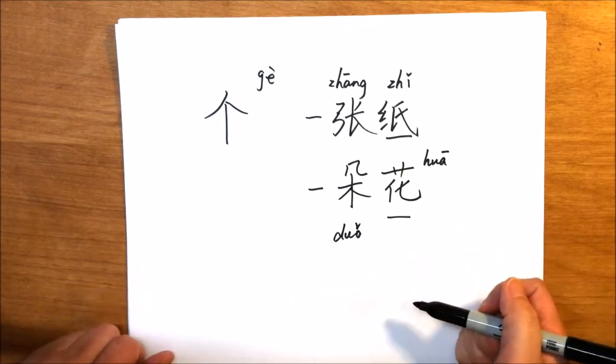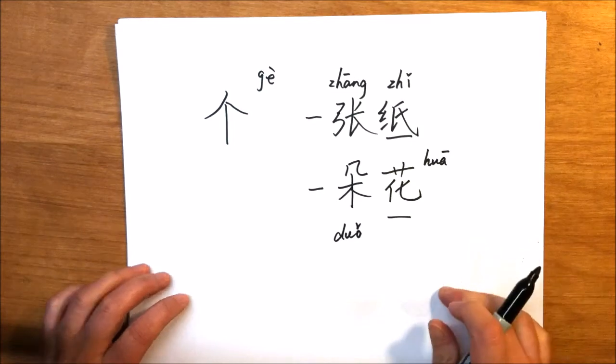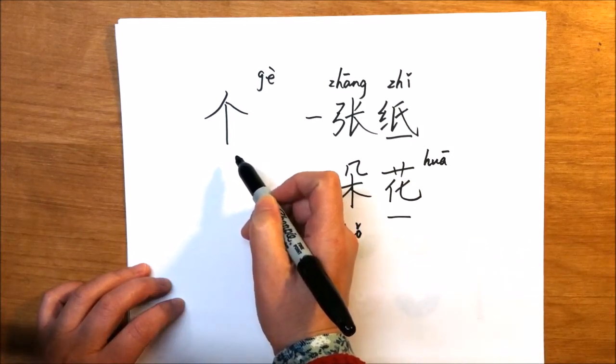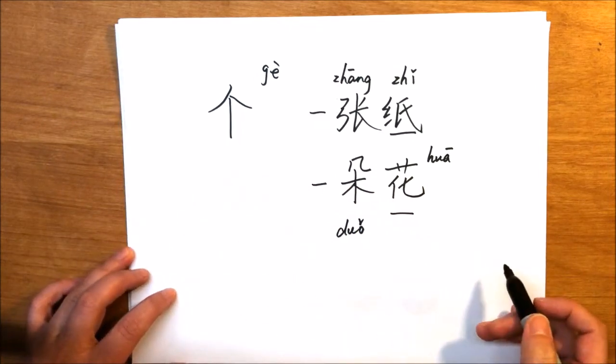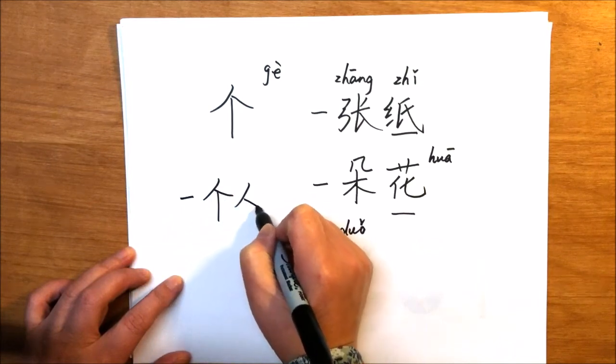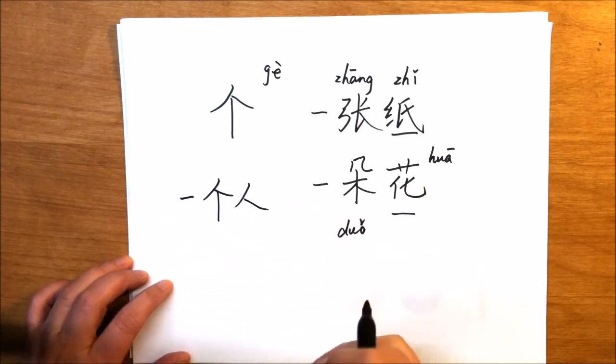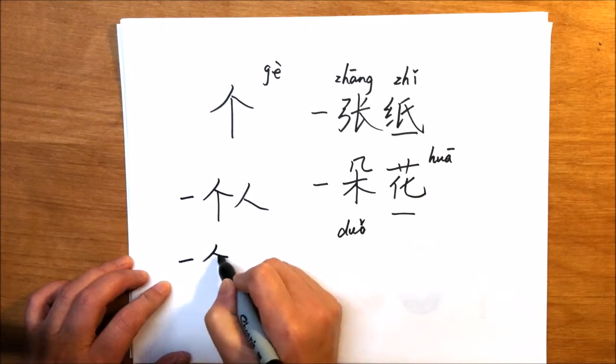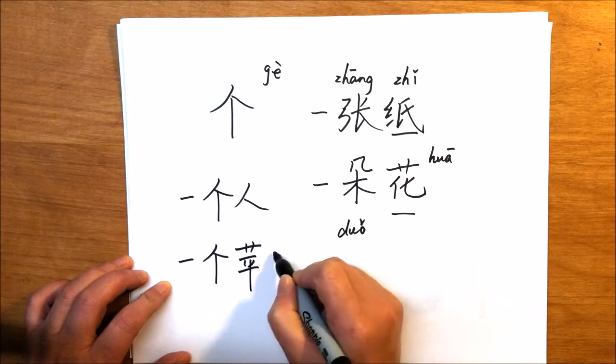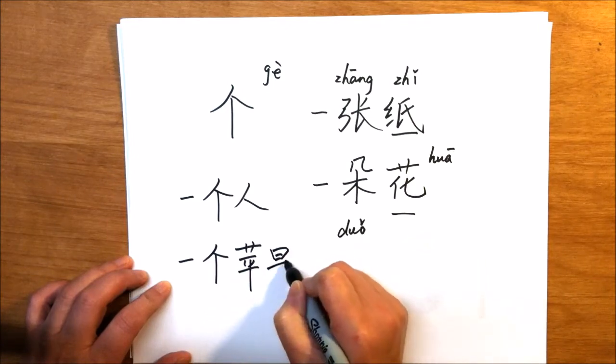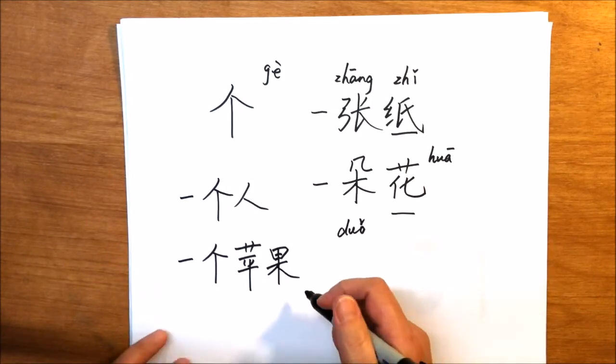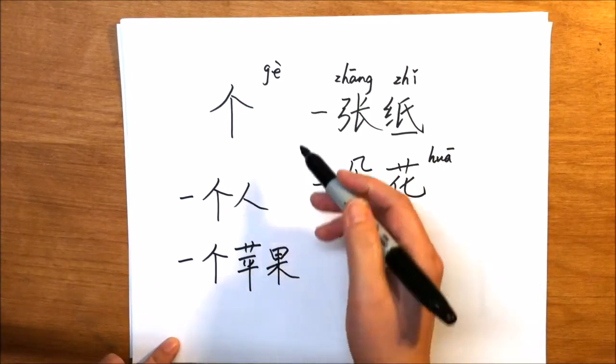For some nouns, specific measure words are not required, then we can use 个. For example, 一个人 means one person, 一个苹果, an apple. So we can just use the general measure word 个.